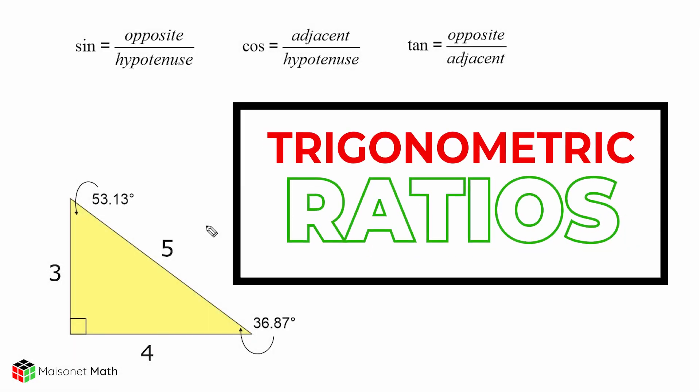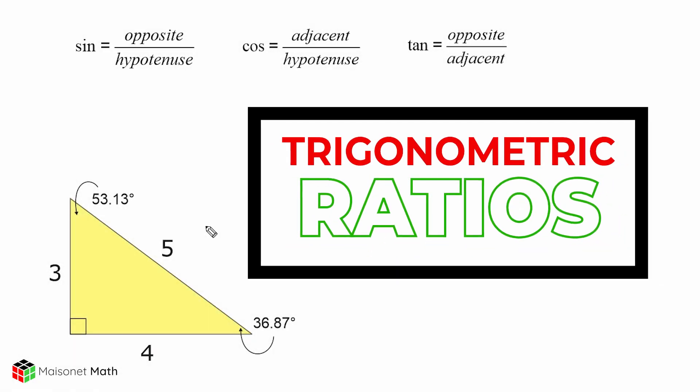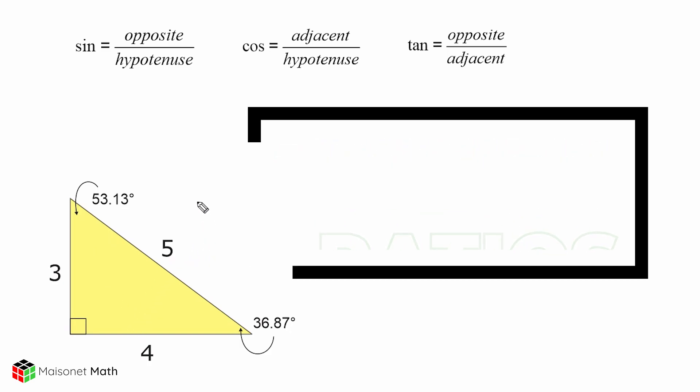Hey, this is Mr. Masonette, and what we're going to do in this tutorial is we are going to use the 3, 4, 5 Pythagorean triple to explore the different trigonometry ratios.